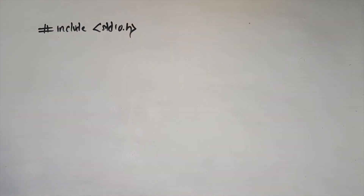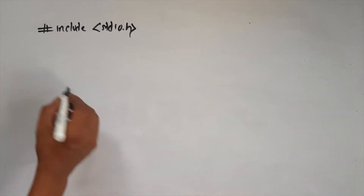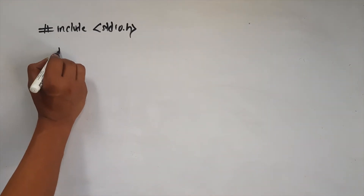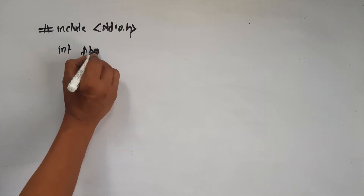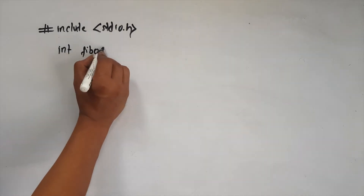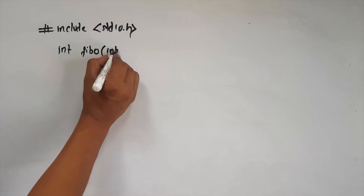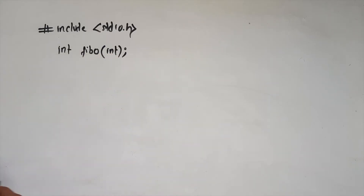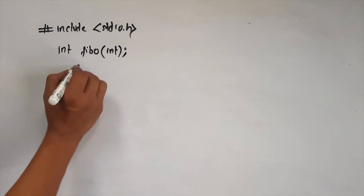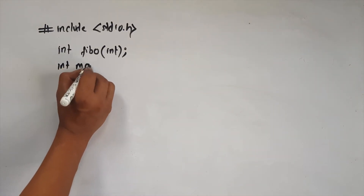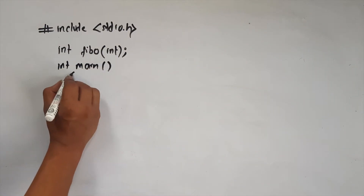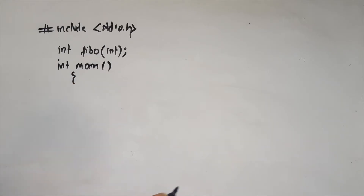Now we will start the program. The function declaration is called int fibo. If you have a number passed, it is an integer. Now we will start the function fibo and the main function. If you have a main function, we will start it and follow the function structure.